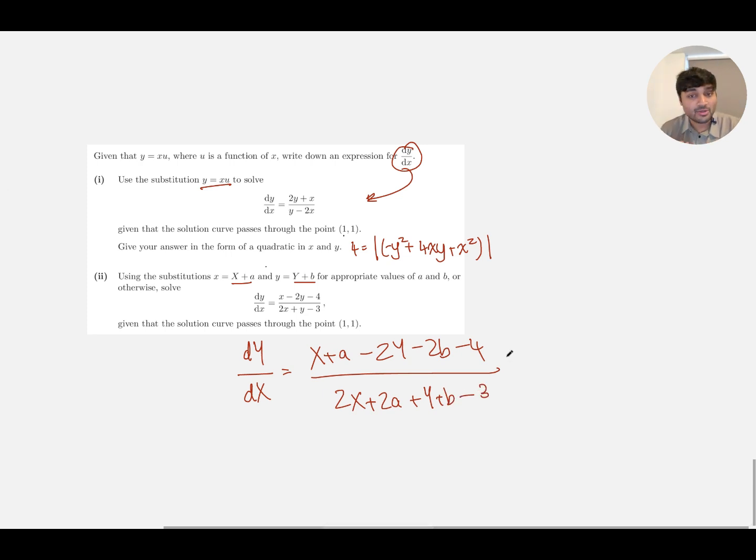Now, this motivates what I was talking about a second ago. We can now choose a and b to make the constant terms vanish. And then we're just going to have X - 2Y, and then 2X + Y on the denominator. And it's now back to essentially something that looks kind of similar to this. And we could, in theory, use the same substitution. We expect it to work quite nicely.